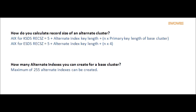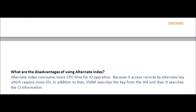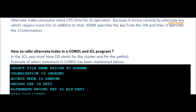Question: How many alternate indexes can you create for a base cluster? Answer: A maximum of 255 alternate indexes can be created.